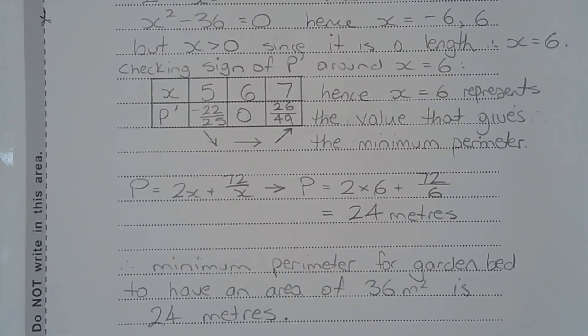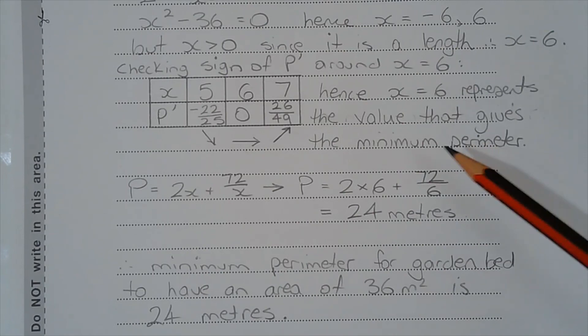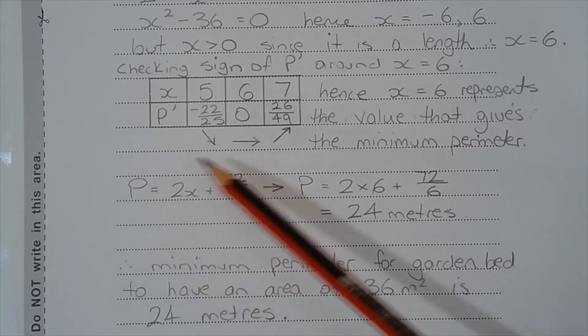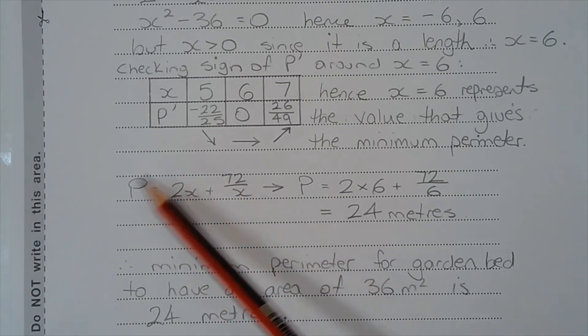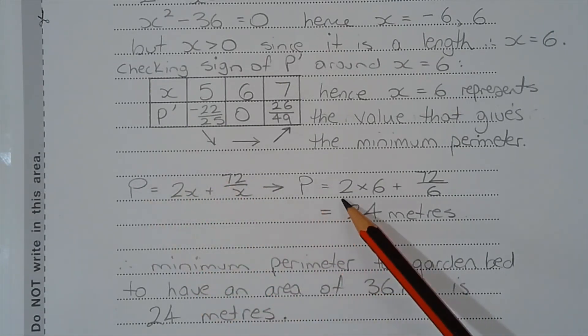Now to find the minimum perimeter we substitute x equals 6 into the equation for perimeter. So perimeter equals 2x plus 72 over x, and substituting x equals 6 into that equation we get p equals 2 multiplied by 6 plus 72 over 6, which equals 24 meters.